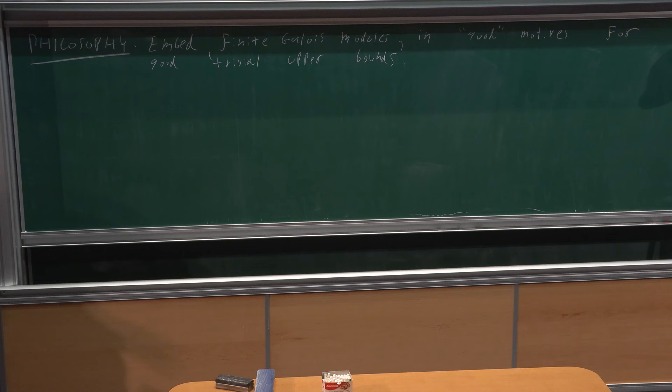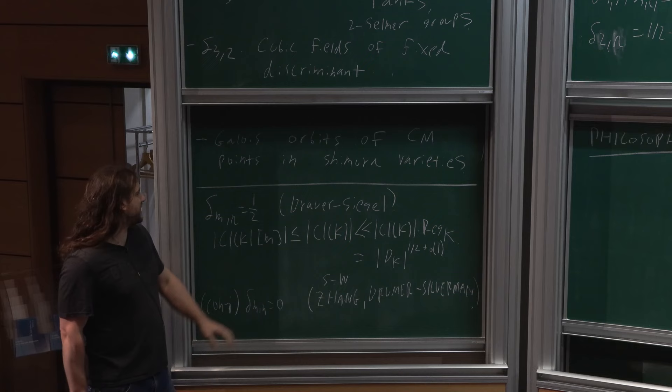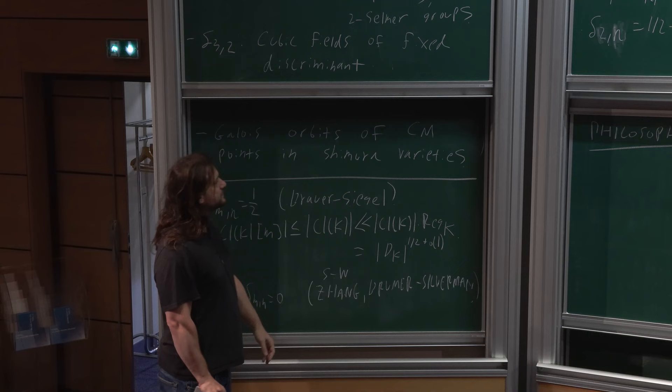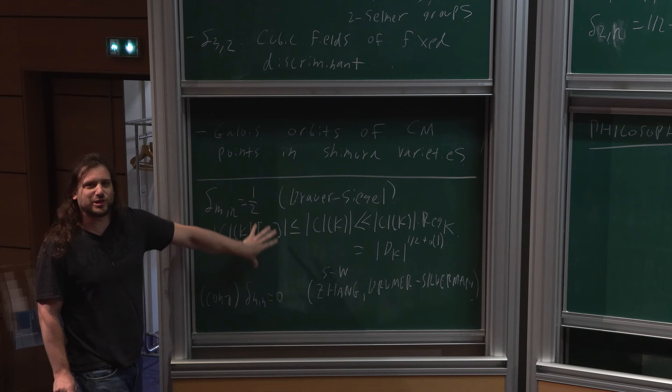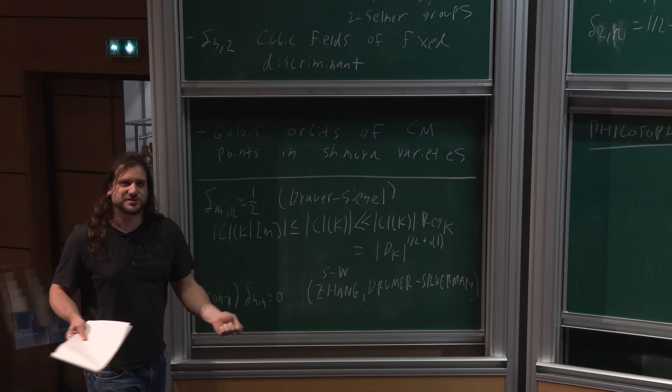The philosophy is to embed finite Galois modules in good motives for good trivial upper bounds. On one side we have what I started with: the trivial upper bound, where you take the M-torsion of the class group, put it inside the class group itself, and get the upper bound from the class number formula. But if you think of the M-torsion as an object that doesn't belong to the class group but just embeds in it, you can try to embed it into other global objects and get better trivial upper bounds.